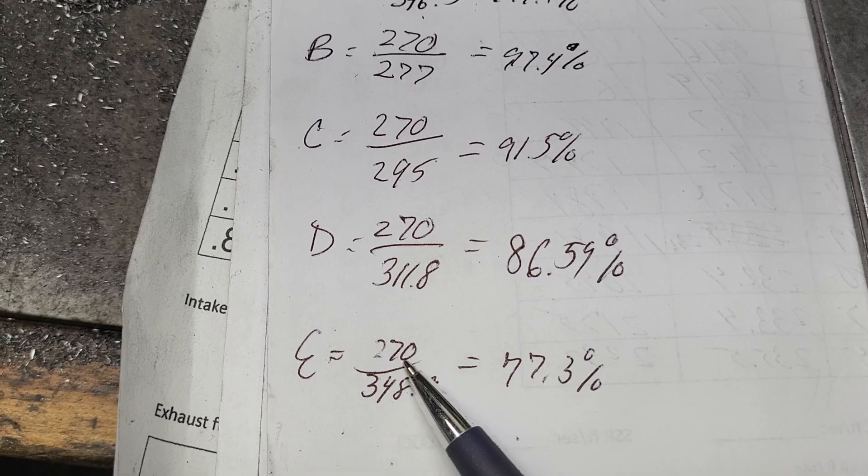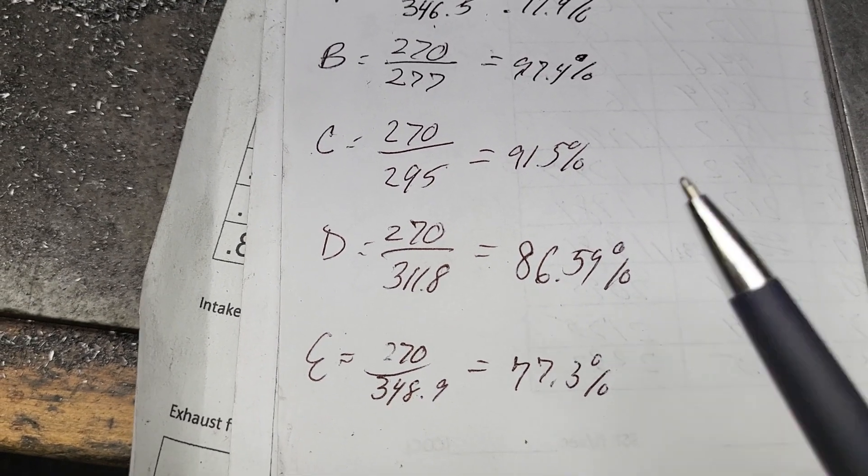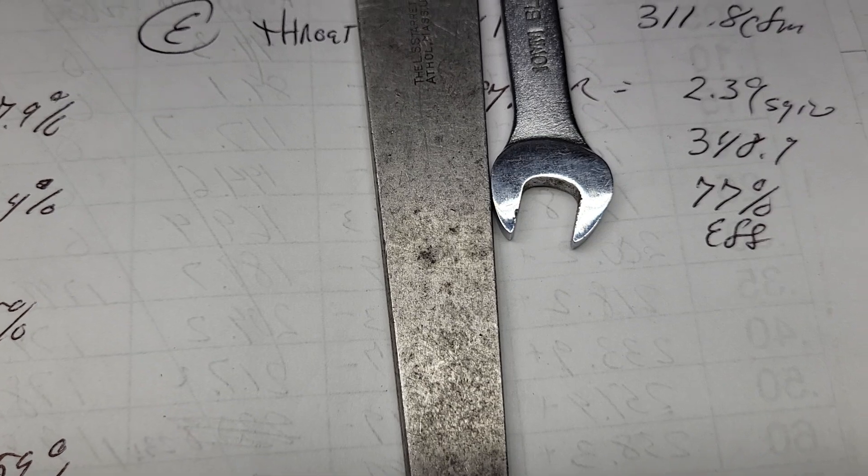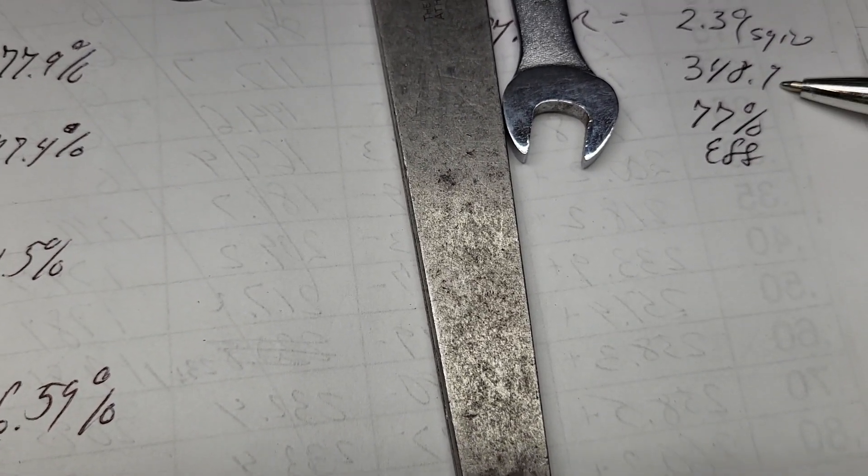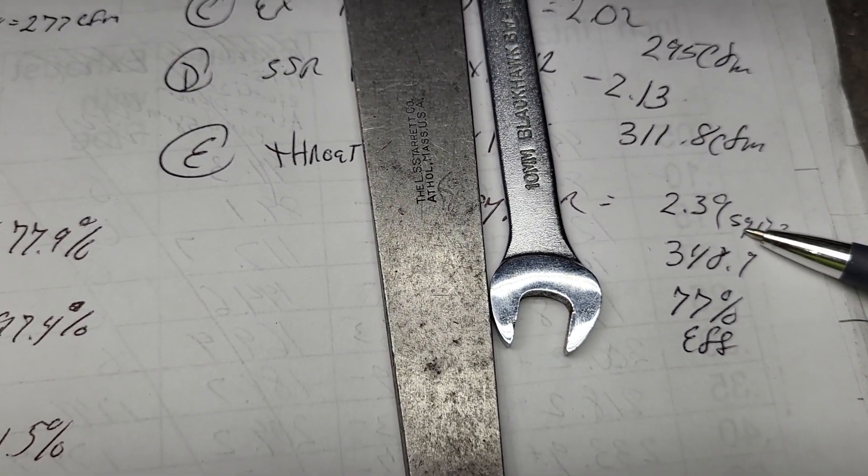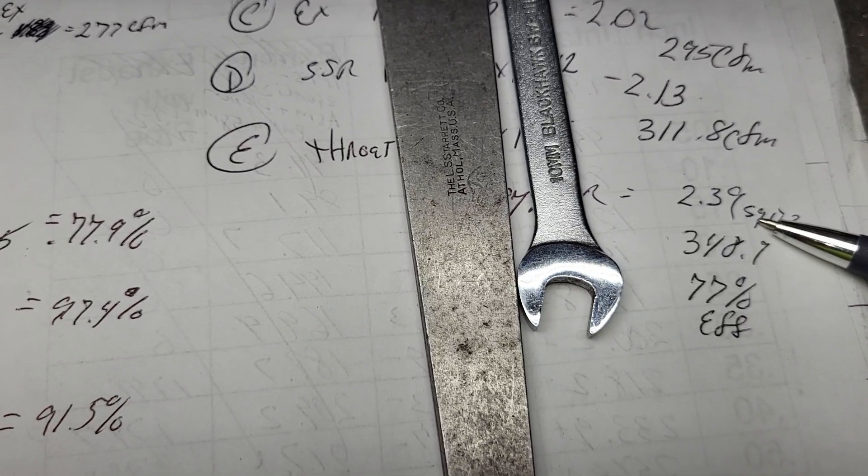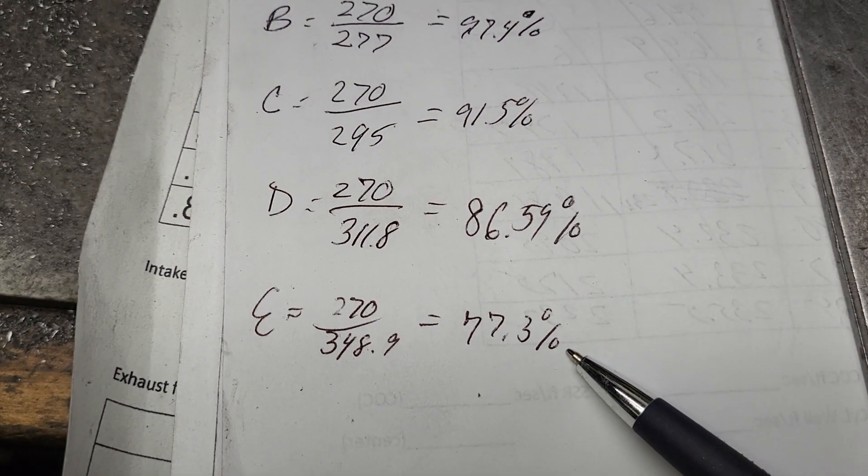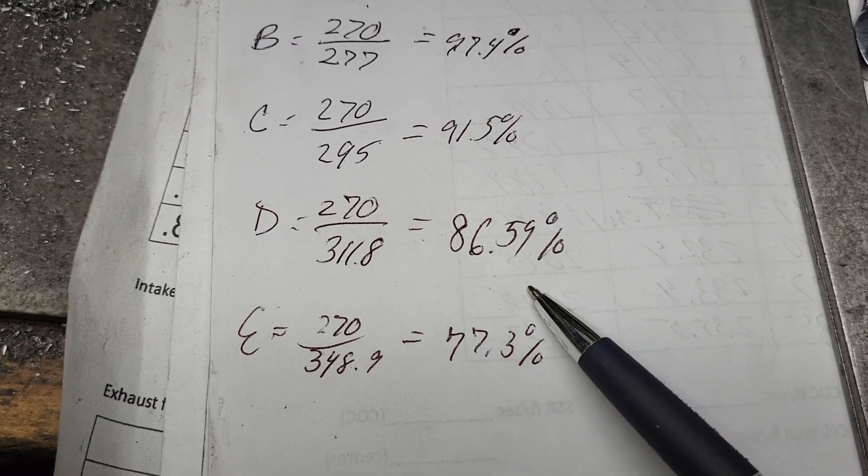Now at our throat, it's much bigger. Should I tell you how big the throat is? I don't know. There we are - that's where we are, 2.39 square inches, 77.3% efficiency. Valve job is super important, guys.